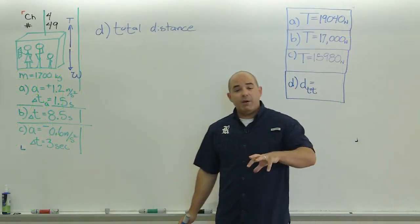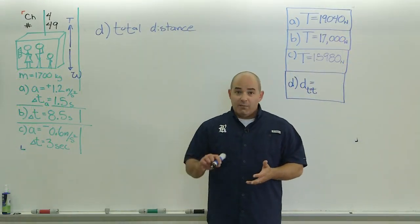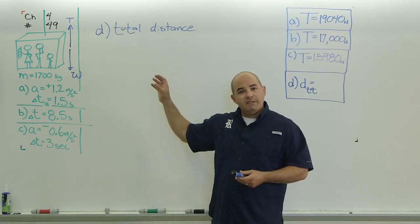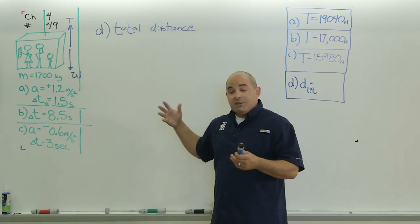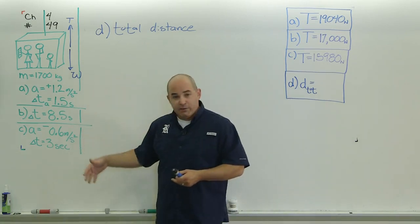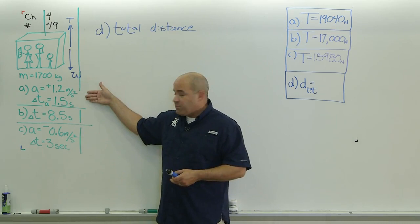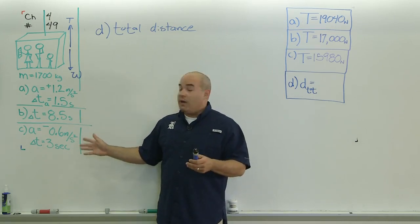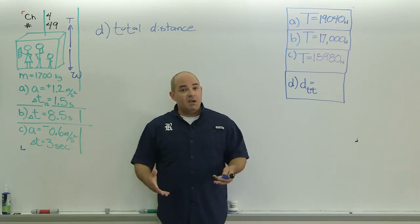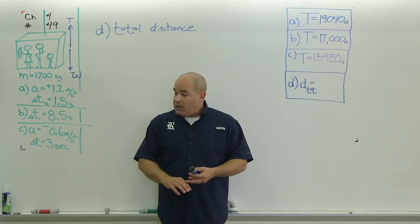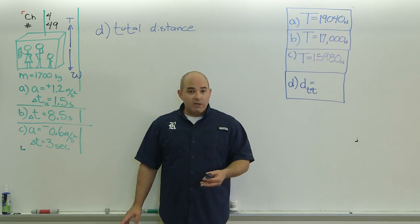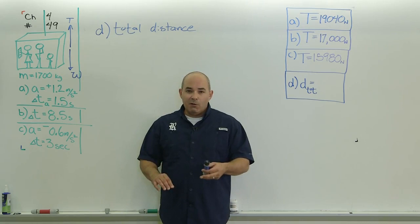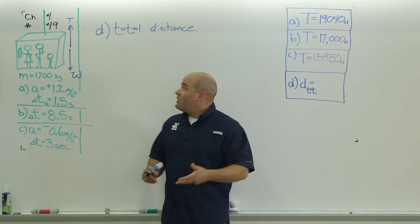Alright, the last part of this problem. It is an excellent review of all the kinematics formulas that we had so far. It wants to know the total distance traveled. Well, we can't just use one simple formula because parts A, B, and C, different things are happening. Part A, it's speeding up. Part B, it's moving at a steady velocity. Part C, it's slowing down. So, I need to find the distance that traveled each time separately. Excellent practice. You might find one way to do it that's a whole lot easier than mine. If so, send me an email. I always like to learn little shortcuts. But here's how I solved it.